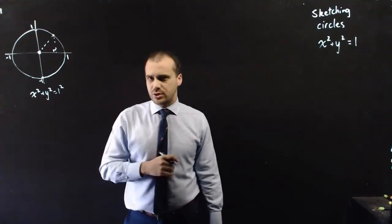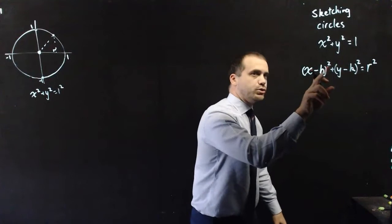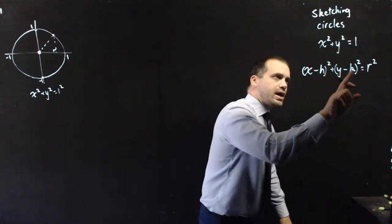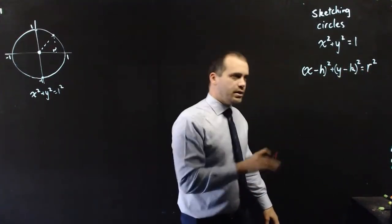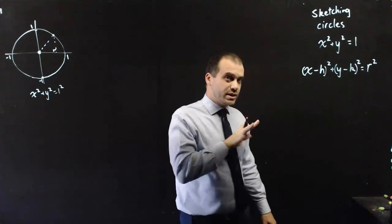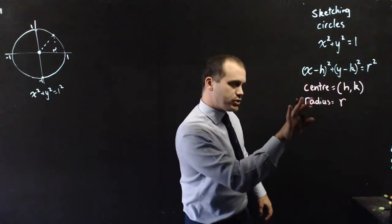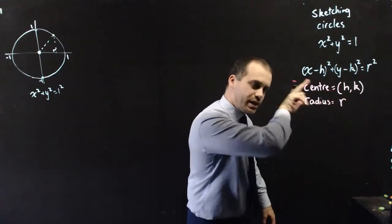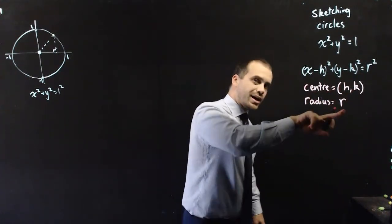All right, let me show you the second equation. x minus h all squared plus y minus k all squared equals r squared. Now, if you've got an equation like that, knowing what the circle looks like is very simple. The center of your circle will be at point h,k, and the radius will be r.